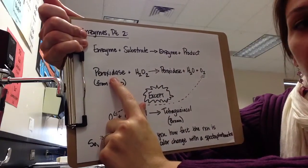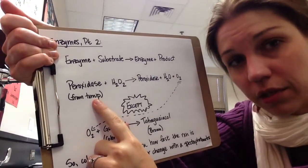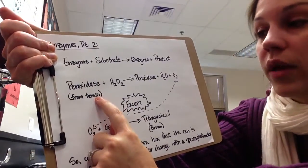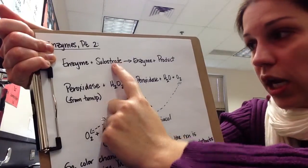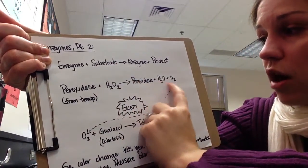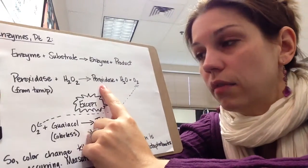This time we're working with peroxidase from a turnip. Doesn't really matter, except that it works better for this particular reaction. But we have the turnip peroxidase plus the H2O2, so that's going to be your substrate. And it's going to be the same reaction as before, peroxidase plus water plus oxygen. That's the exact same reaction that we did with the floating disc reaction earlier.